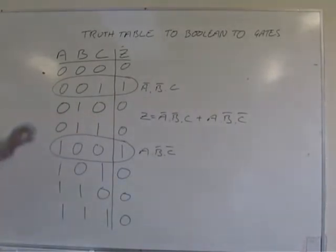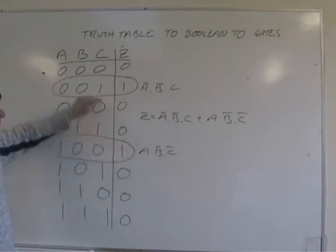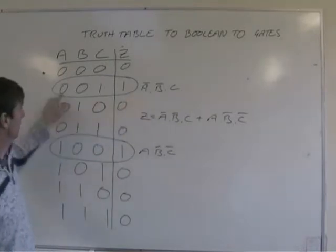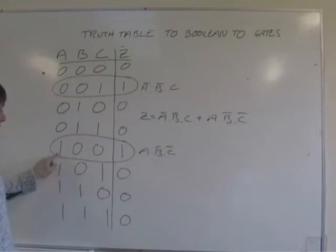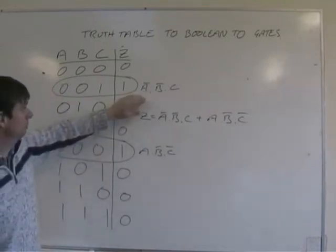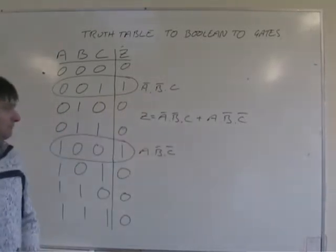Once again, twice something happens at the output. So that makes these two lines the two interesting lines. That term is not A and not B and C. This term is A and not B and not C. Two terms. We'll get an output if that's on or if that's on. So that is the Boolean statement.